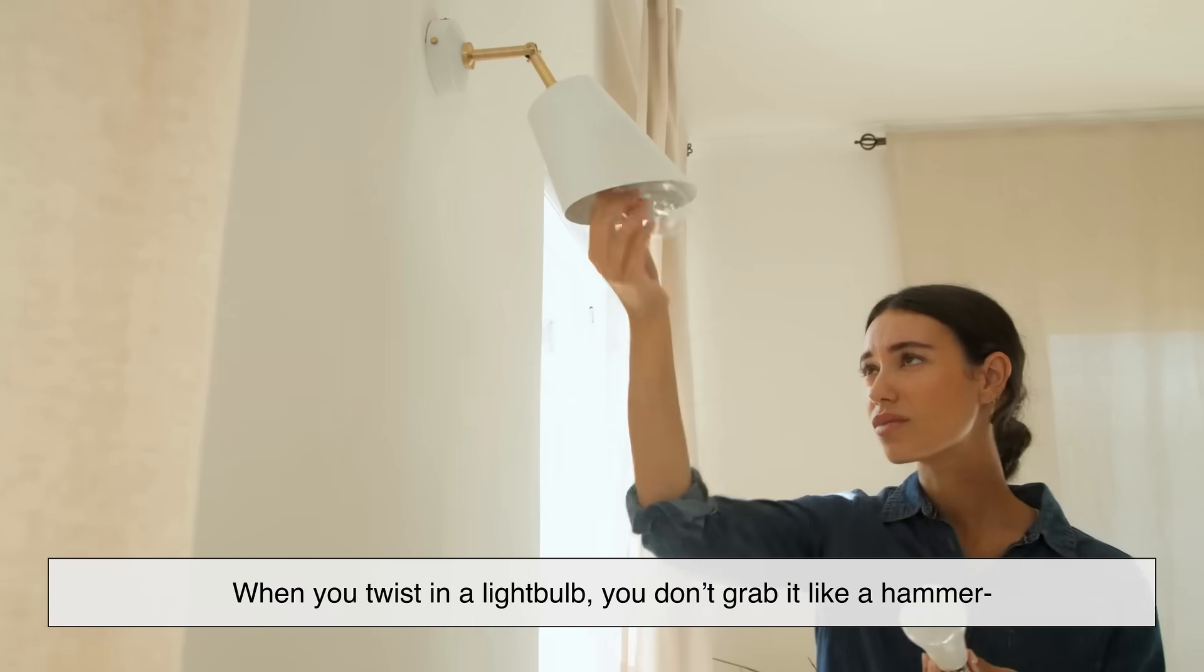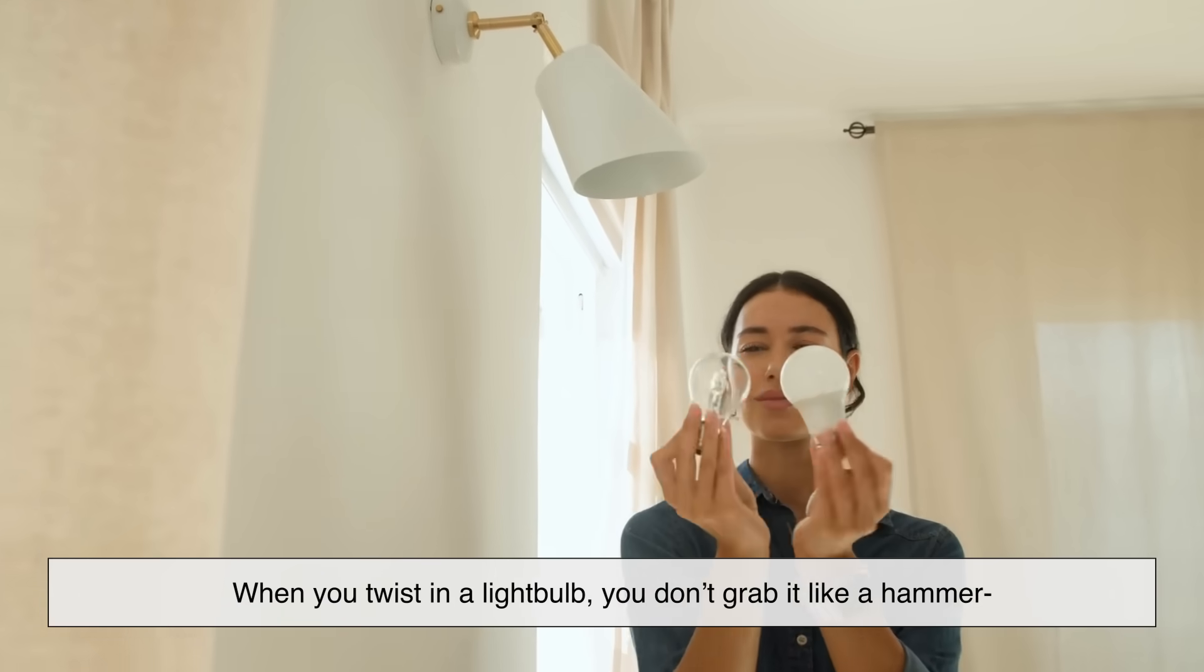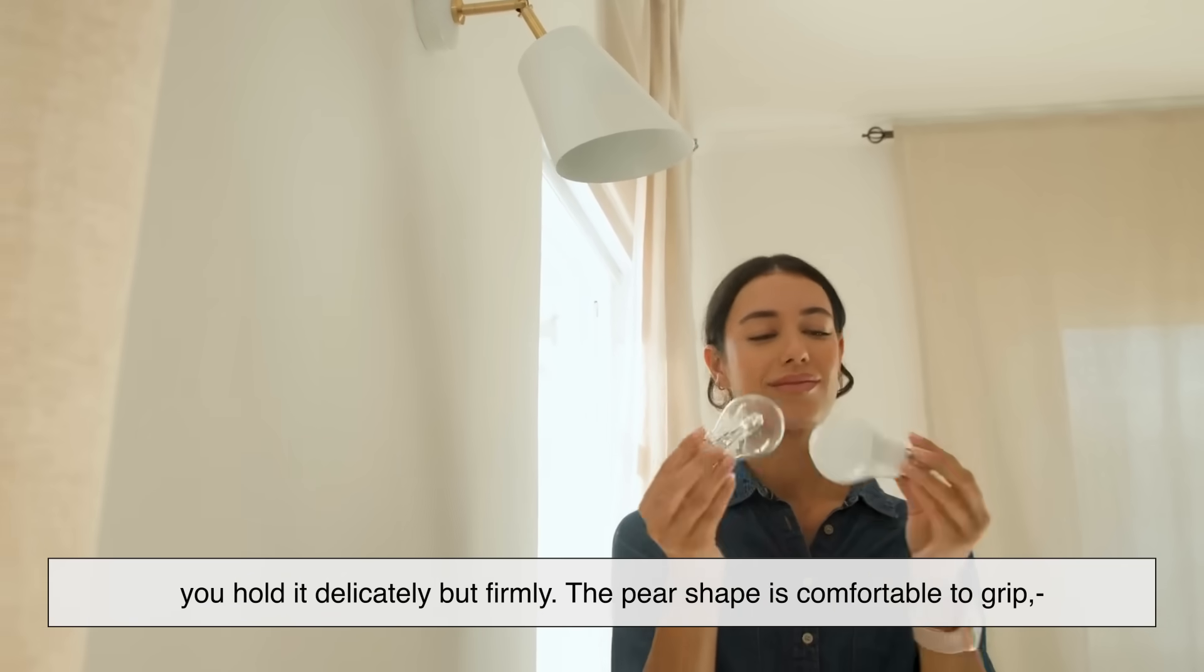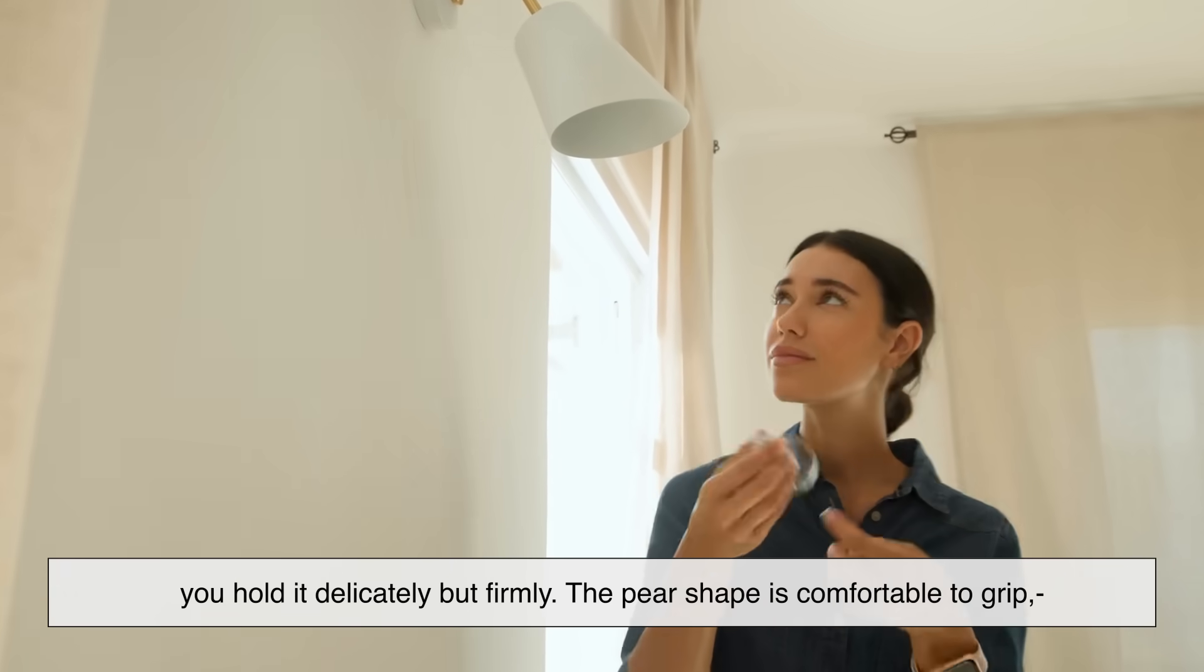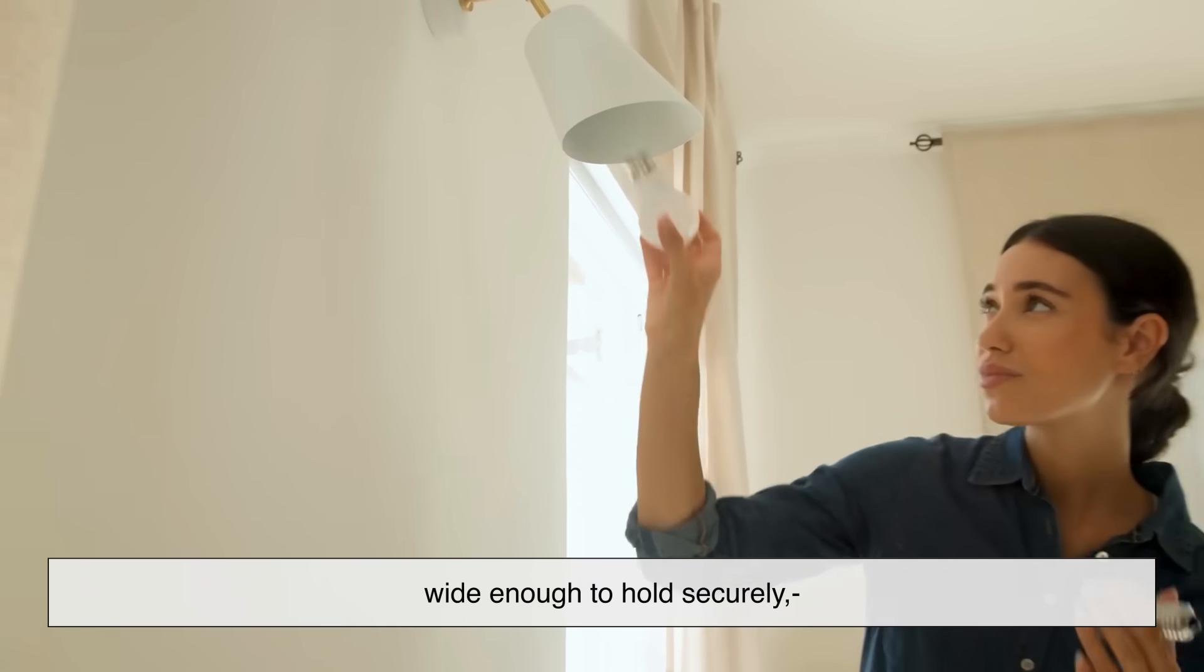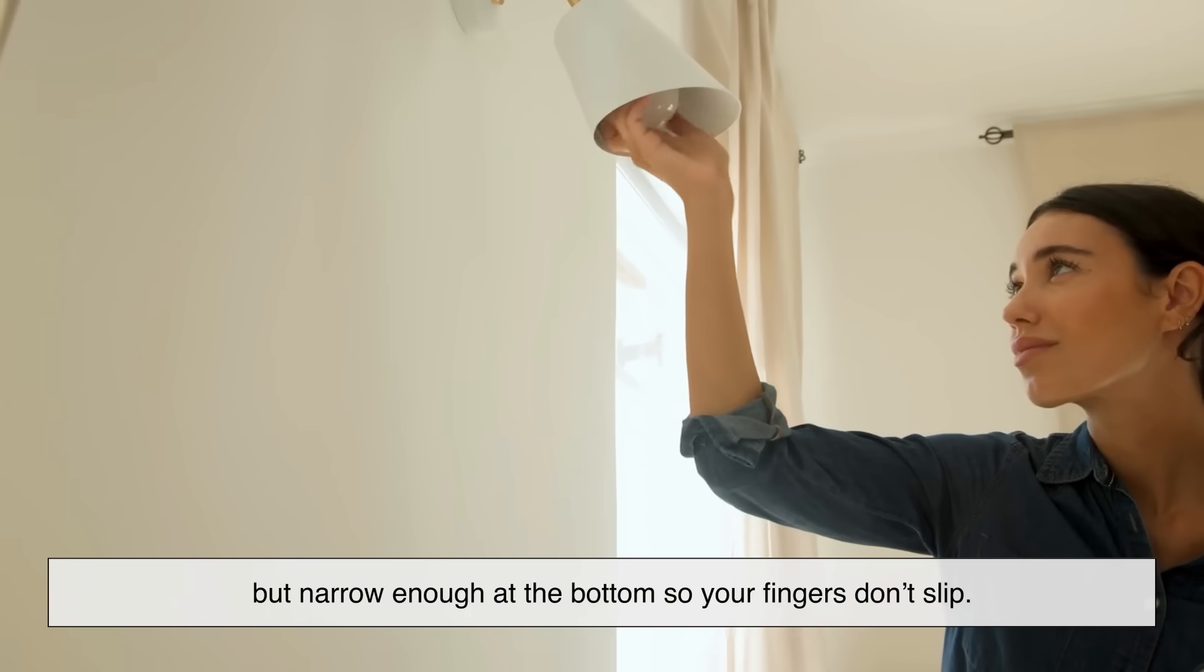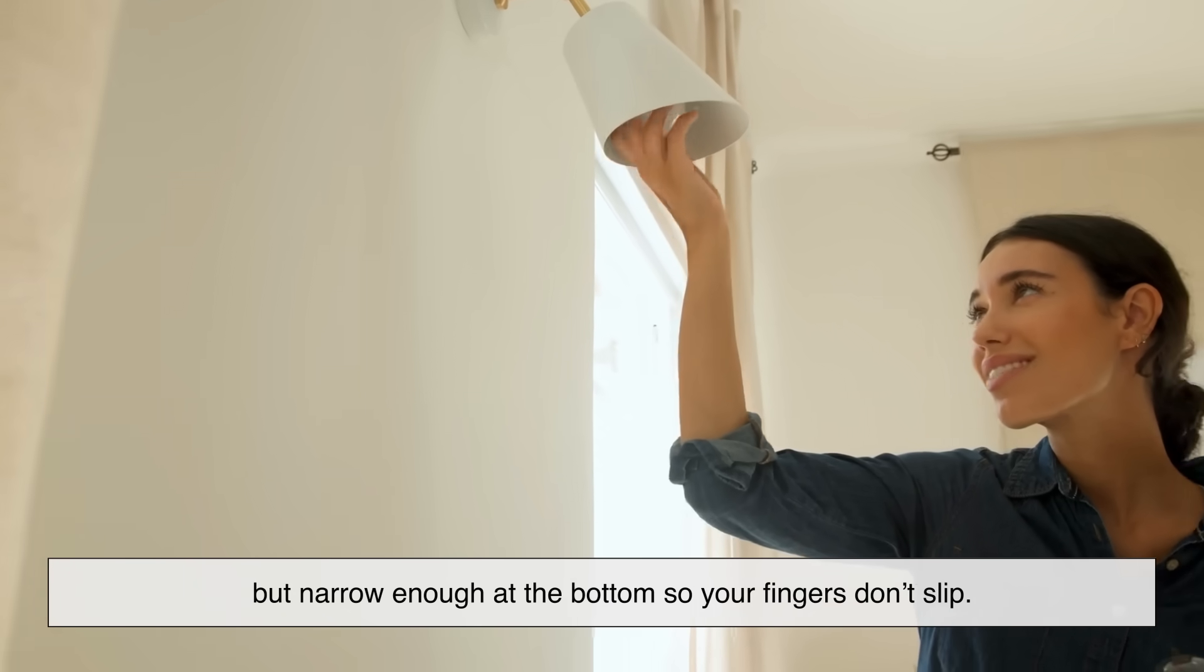Another thing we can't ignore is how the bulb feels in the hand. When you twist in a light bulb, you don't grab it like a hammer. You hold it delicately but firmly. The pear shape is comfortable to grip, wide enough to hold securely but narrow enough at the bottom so your fingers don't slip.